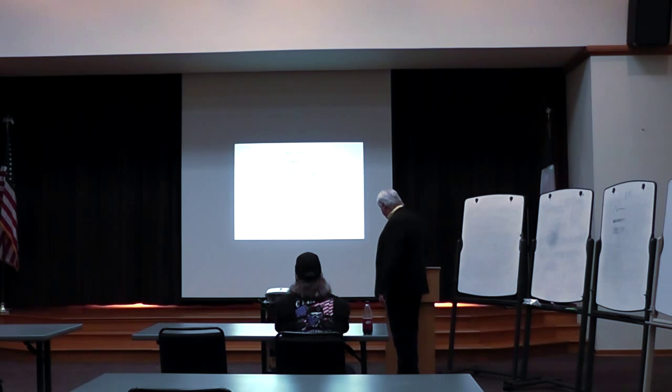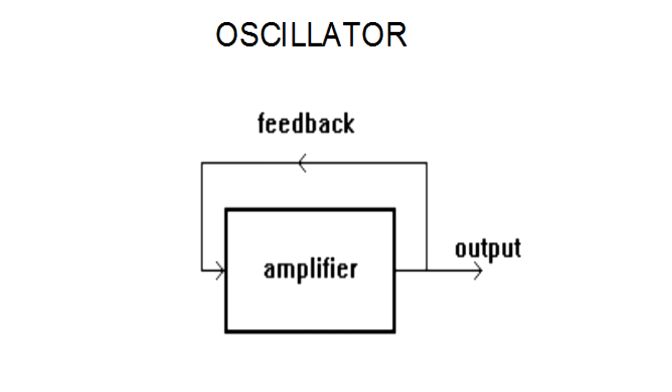Now to be able to make a carrier wave, I have to have something called an oscillator. An oscillator is a device that makes a periodic RF waveform. It could be also an audio oscillator that makes a periodic audio signal. But in this case, we're talking about radio transmitters, so I'm talking about RF oscillator. An oscillator is basically an amplifier with feedback.